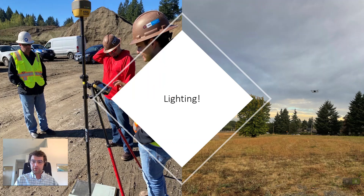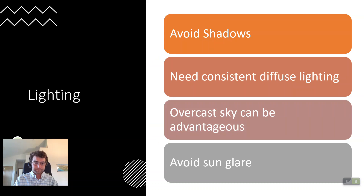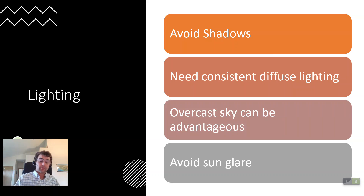Lighting. Here are a couple of projects I've done. On the left you can see us grabbing some ground control on a nice blue-sky, very bright day with a lot of shadows. On the right is a cloudier day, early in the morning, a little bit darker. Avoid shadows — fly during midday. A bright sun isn't always the best for certain projects. If you have a lot of buildings, there are going to be shadows around them, so a more cloudy day may be better. Neat, consistent, diffuse lighting from an overcast sky can be advantageous — you have less light but also fewer shadows.